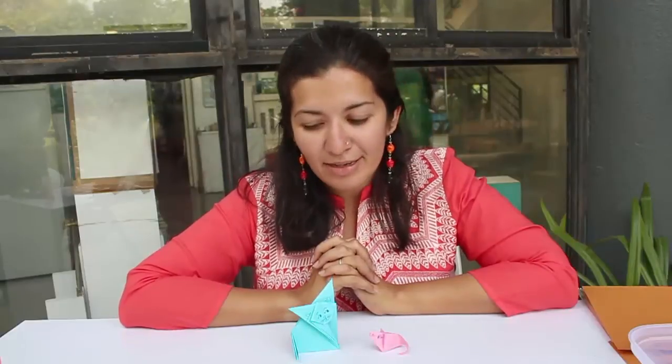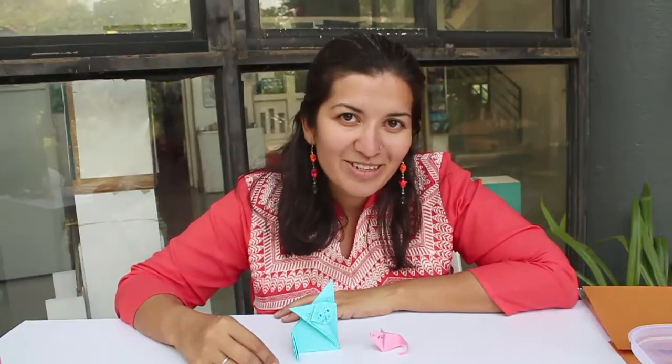Today we are going to make the origami cat. This is one of my favorite models because it's one of the simplest origami cats to make. It's made with one square sheet of paper.